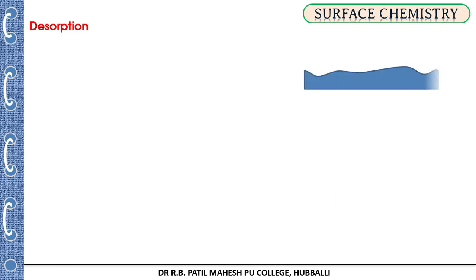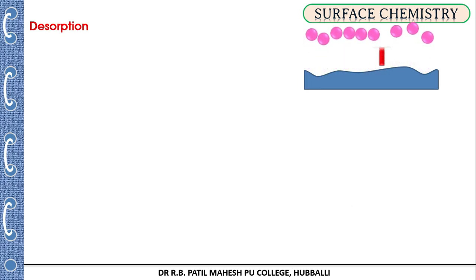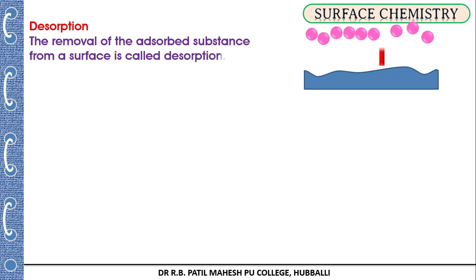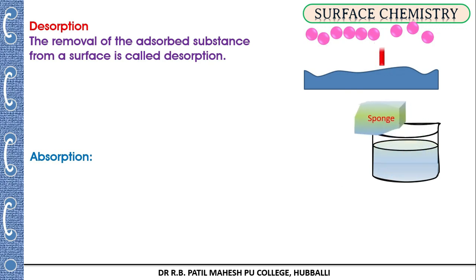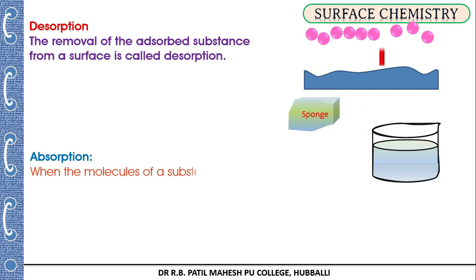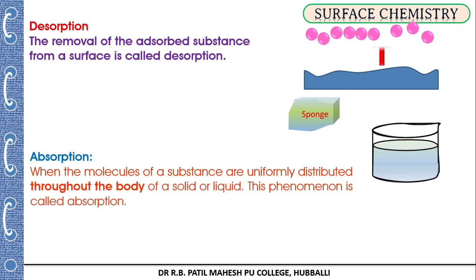Desorption is the removal of adsorbed molecules from the surface — the removal of adsorbed substances from the surface is called desorption. Absorption, on the other hand, is when molecules of a substance are uniformly distributed throughout the body of a solid or liquid, like water molecules uniformly distributed throughout the body of a sponge. That process is called absorption.